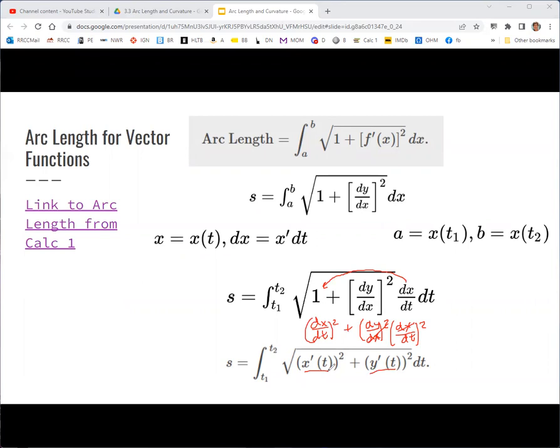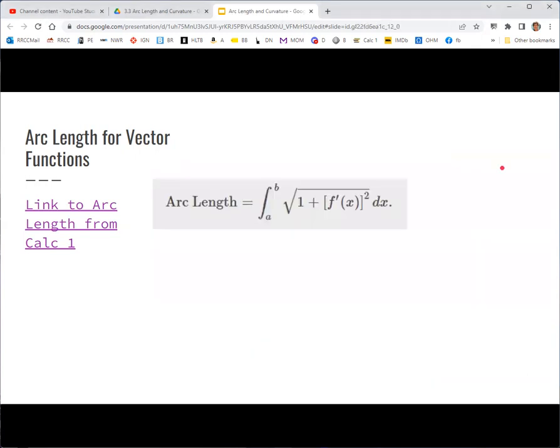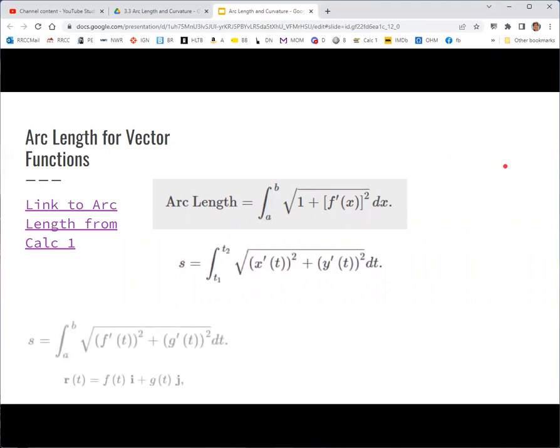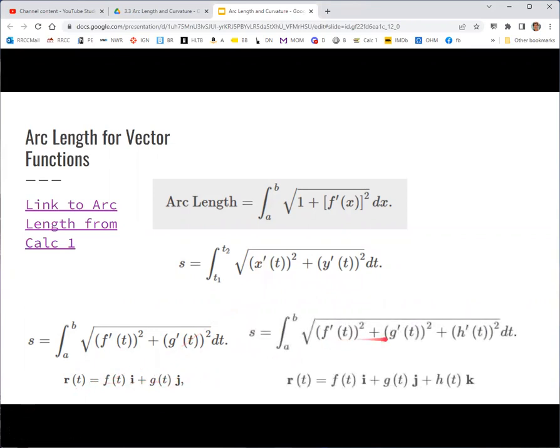So in terms of parametric equations, x of t and y of t, for a parametric curve and for a vector-valued function, our formula takes this form. This is in two dimensions, but you can easily extend it to three dimensions by just adding on a plus z prime of t squared inside the square root. Here it's written where f and g are the component functions for a vector-valued function r. And in three dimensions, f, g, and h.